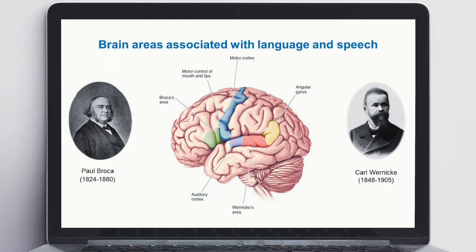Let us begin the lecture with an overview of the main speech areas, which most people have in the left hemisphere of the brain cortex. Much of what we know about these areas stems from research on aphasia, a partial or complete loss of language skills caused by brain injury. In the 19th century, French neurologist Paul Broca and German neurologist and psychiatrist Karl Wernicke described two speech areas that were named after them.